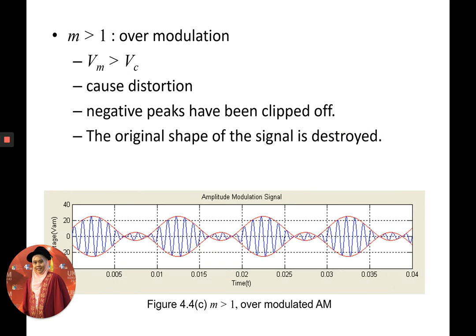Over modulation is what we don't want for our system or signal. The amplitude of the modulating signal is bigger than the carrier signal. This type of modulation causes distortion contained inside the small envelope or circle. Negative peaks are clipped off — the original shape of the signal is destroyed, and the receiver may not understand what information signal was embedded on the carrier signal.